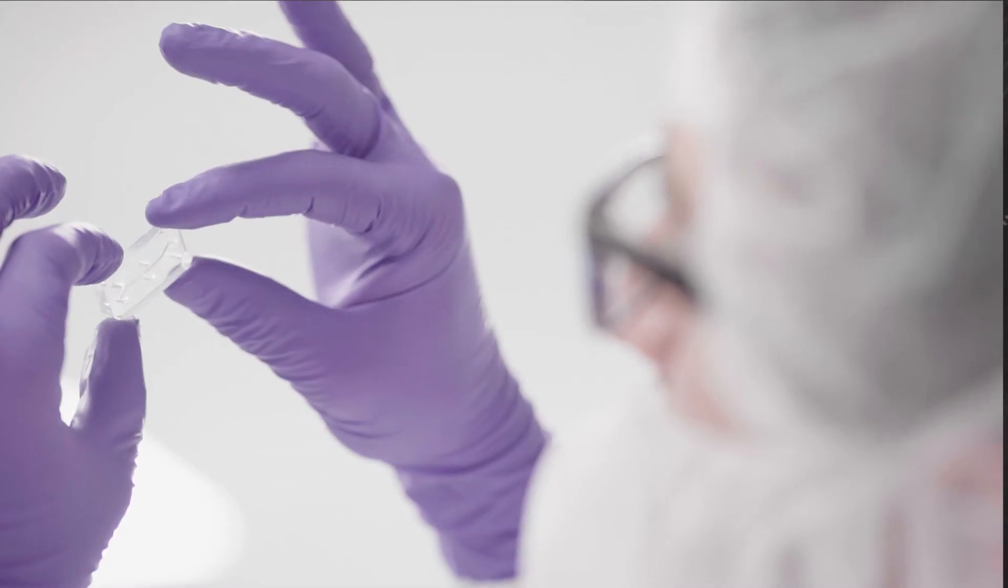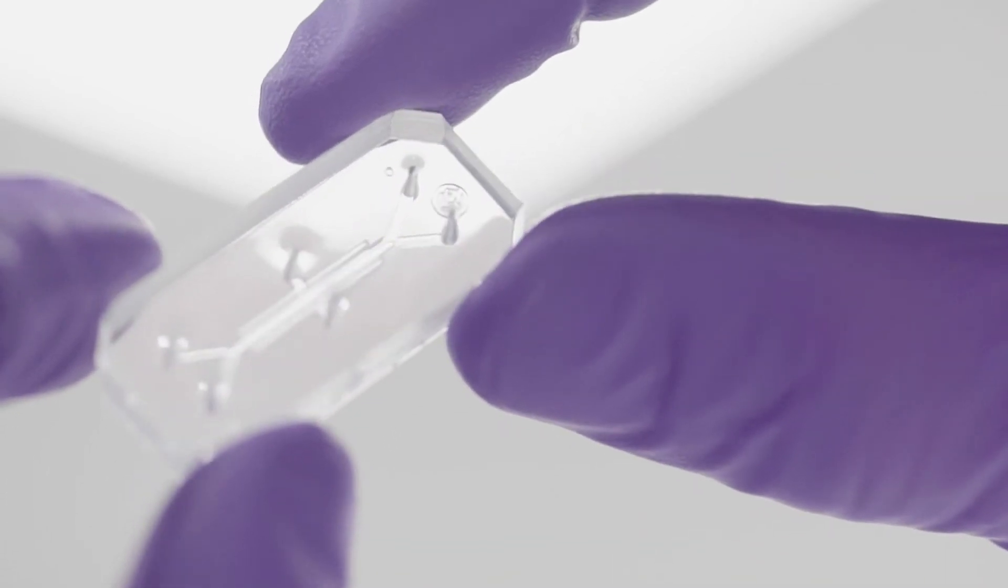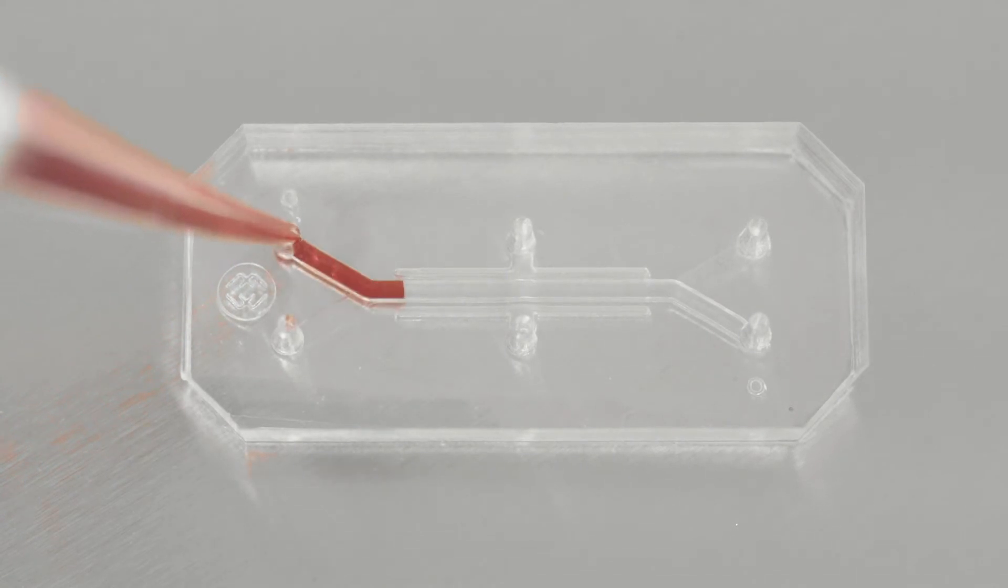If you recreate the environment that the cells are used to within the body, they start behaving like they do within the body. Inside the chips, we're able to recreate critical factors that allow the cells to function like they do in the human body.